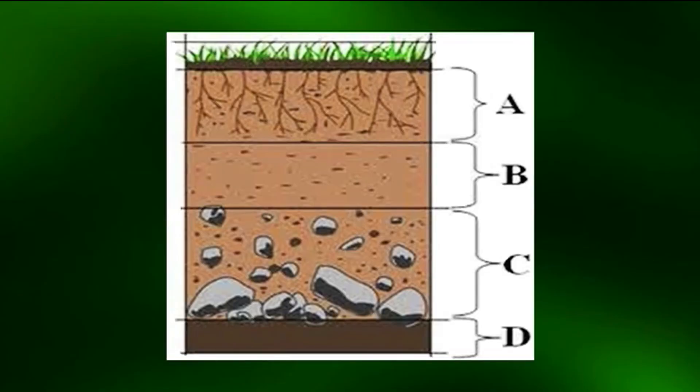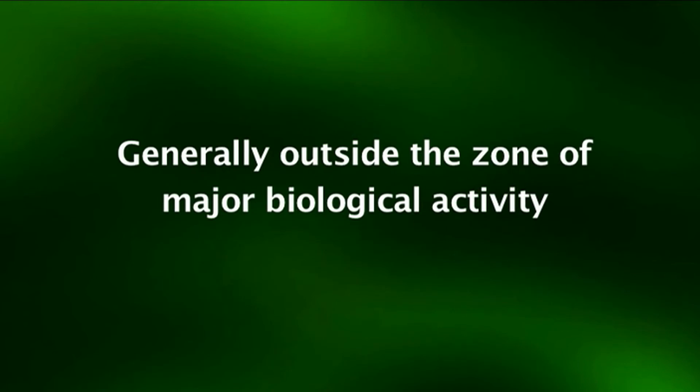The material of the C horizon may be either like or unlike the material from which the solum has presumably formed. It generally possesses various sized chunks of the rock below, surrounded by smaller bits of rock and clay weathered from those chunks, and is generally outside the zone of major biological activity. Some of the original rock is intact but other parts have been chemically changed into new minerals.